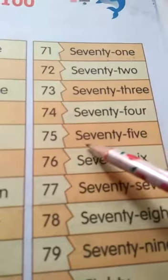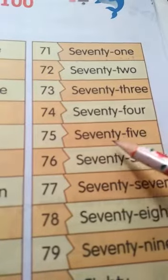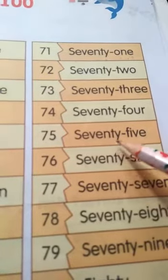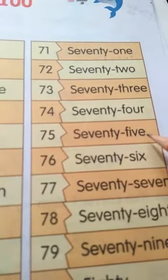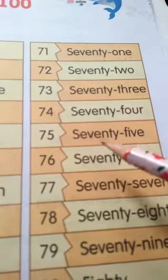75. S, E, V, E, N, T, Y - seventy. F, I, V, E - five. 75.